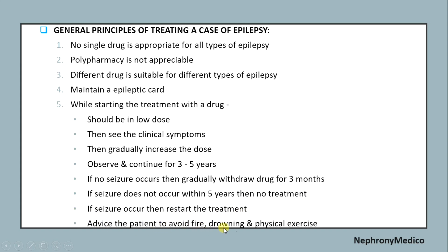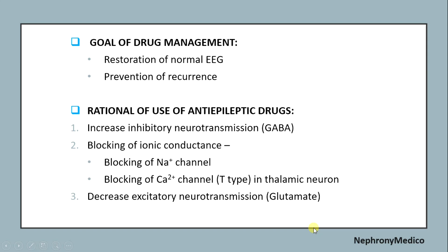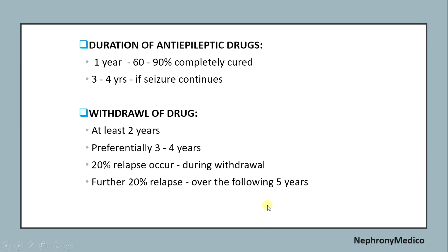Advise the patient to avoid fire, drowning, and strenuous physical exercise. The goal of treatment is restoration of normal EEG and prevention of recurrent seizures. Rational use of antiepileptic drugs includes increased inhibitory neurotransmission, blocking of ionic conductance, and decreased excitatory neurotransmission. Duration: after one year, 60 to 90 percent are completely cured, and three to four years if seizures continue. Withdraw the drug for at least two years, preferably three to four years. 20 percent relapse occurs during withdrawal, and a further 20 percent relapse over the following five years.